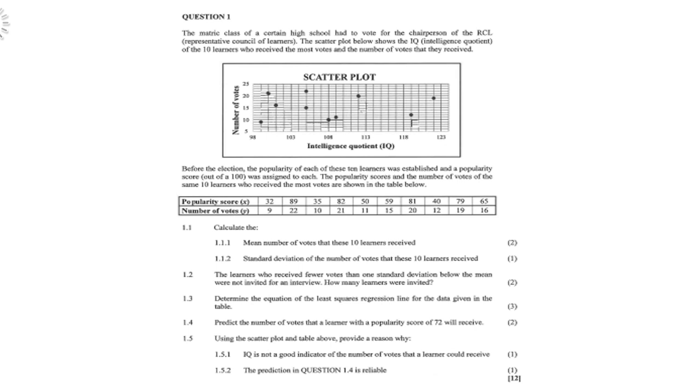Question 1, which of course is based on statistics. The matric class of a certain high school had to vote for the chairperson of the RCL, that is the representative council of learners. The scatter plot below shows the IQ or the intelligence quotient of 10 learners who received the most votes and the number of votes that they received.